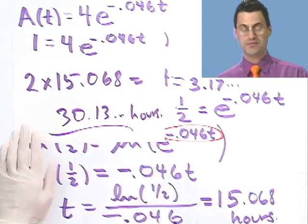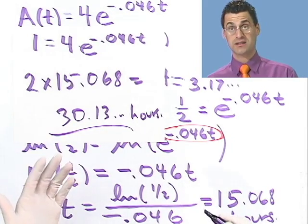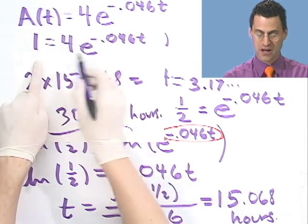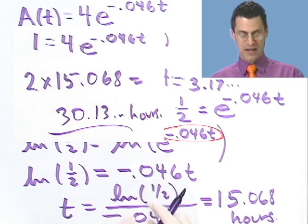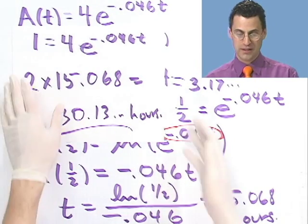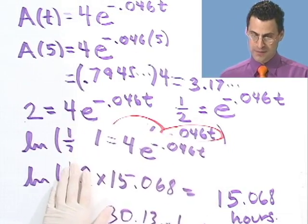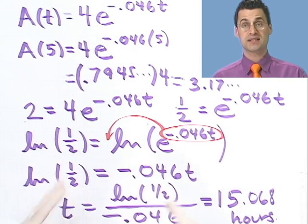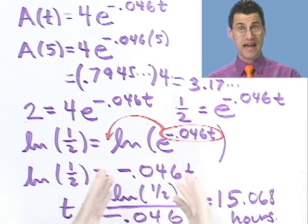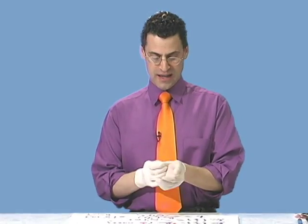So once you know the half-life, you can figure out all sorts of things. Or you might want to practice solving it directly and see the exact same answer. In either case, you can see that in the real world, these radioactive substances do obey the exponential laws of decay. Now that our experiment is over, try these — and if you don't have the gloves, be careful.